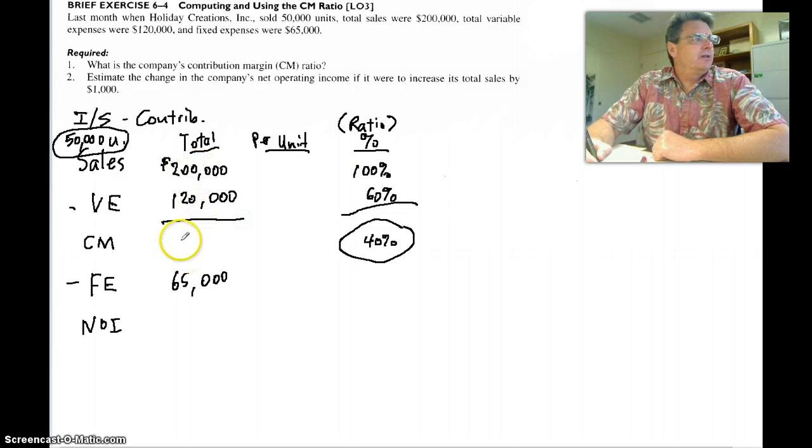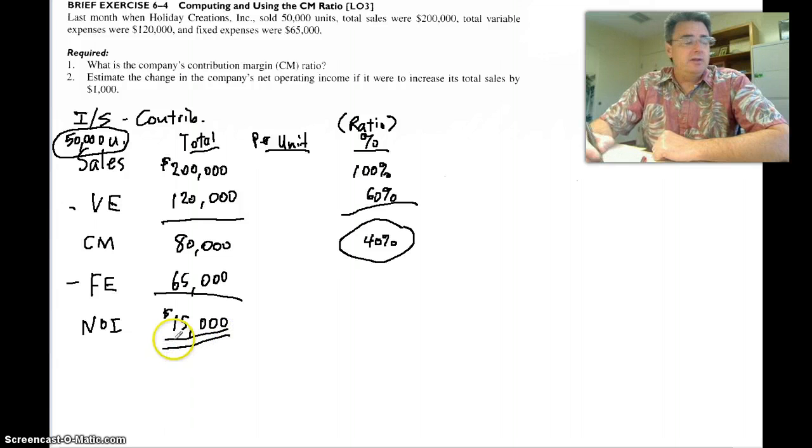So $200,000 of sales minus $120,000 of variable expense leaves us $80,000 contribution margin. Less $65,000 of fixed expenses. Looks like it's a $15,000 net operating income. That's nice. We're making a profit. That's good.